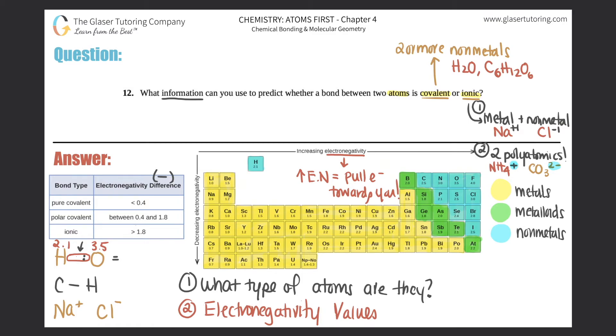So if I subtracted these two, 3.5 minus 2.1, I get 1.4. And remember, electronegativity is always going to be a positive number. So if you did 2.1 minus 3.5, just take the absolute value. So this would be 1.4. And 1.4 is between 0.4 and 1.8. So that's why this bond, H and O, would be a polar covalent bond.